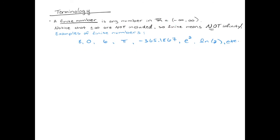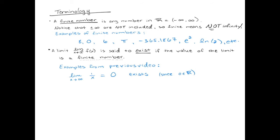A limit that is either from the right with the plus sign or from the left with the minus sign is said to exist if the value of the limit is a finite number. Let's go through some of the examples in the previous video.